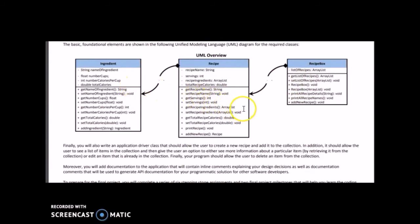One key thing to make sure you modify, if you haven't already, is for the recipe ingredients list of the recipe class. It wasn't required before to have an ArrayList of ingredient objects — a lot of people were using an ArrayList of strings holding just the ingredient names. But for this final project, make sure you use an ArrayList of ingredient objects, with the ingredient object being the ingredient class that you created.